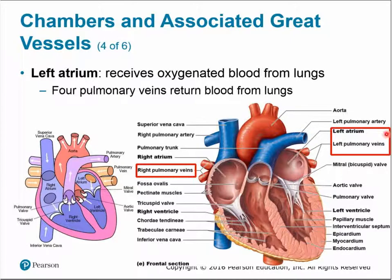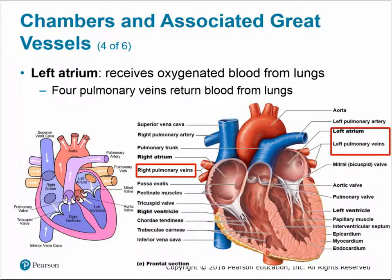The left atrium receives oxygenated blood from the lungs through four pulmonary veins — two on the left and two on the right — which empty into the left atrium before blood enters the systemic circuit.